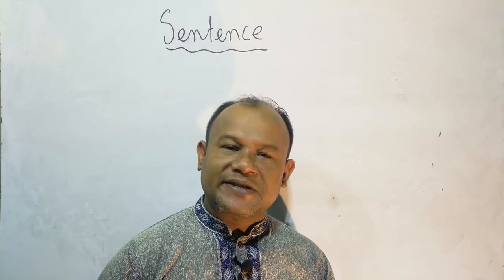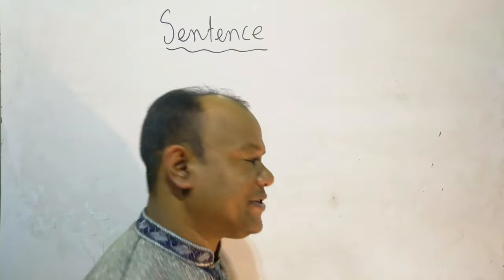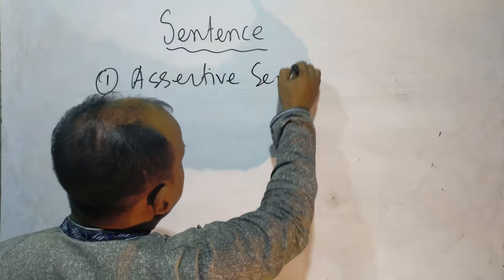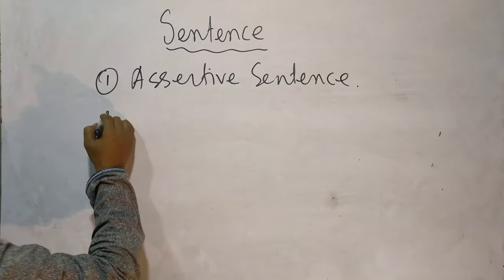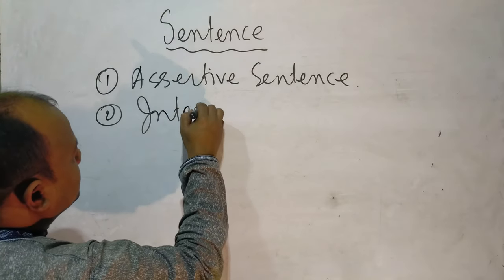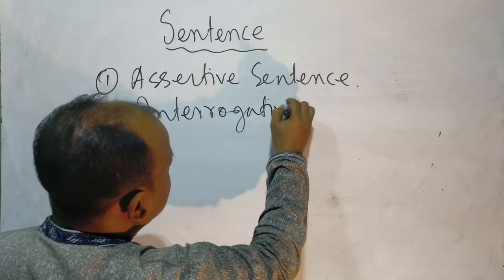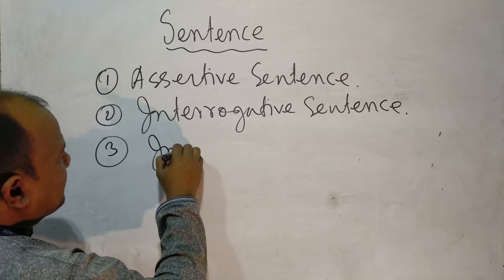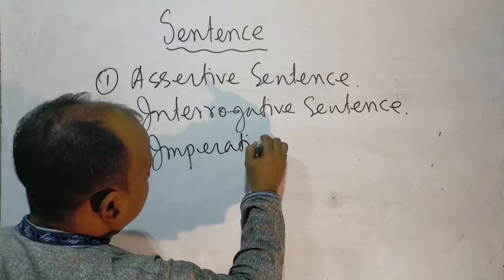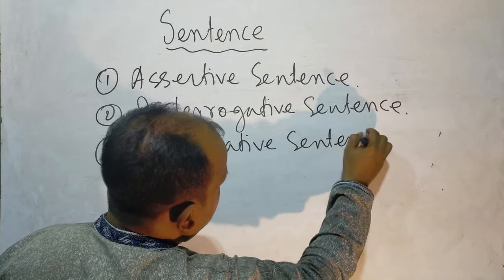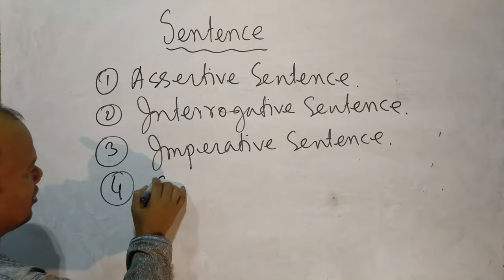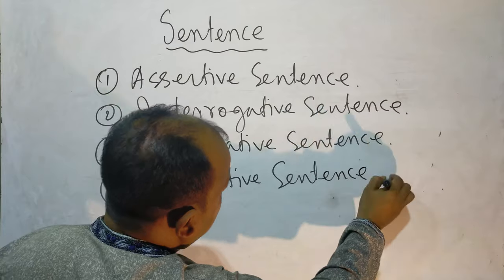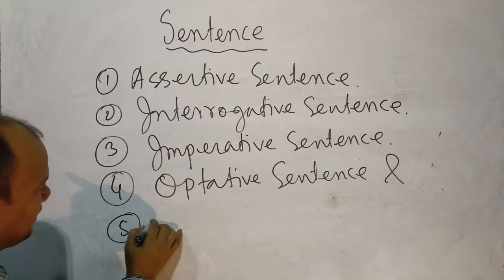Based on meaning, a sentence can be divided into five kinds: number one, assertive sentence; number two, interrogative sentence; number three, imperative sentence; number four, optative sentence; number five, exclamatory sentence.